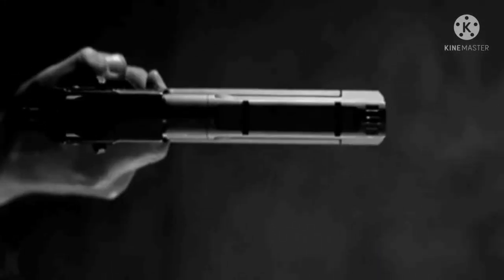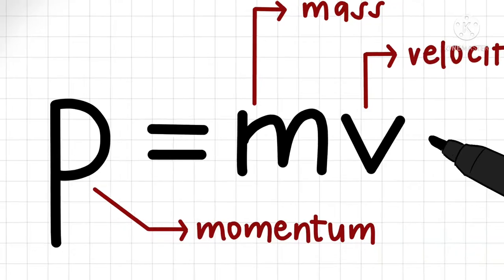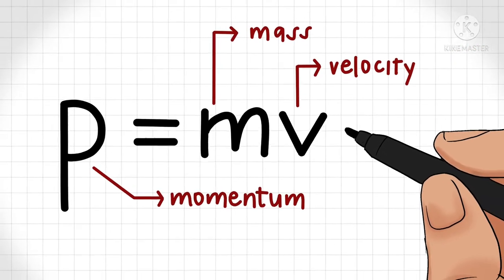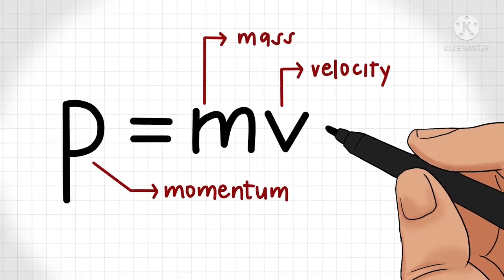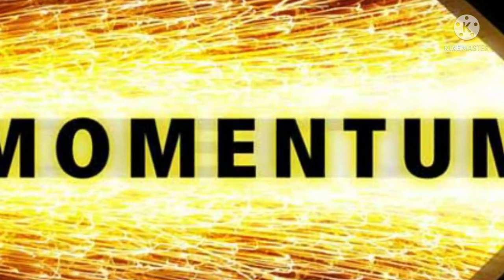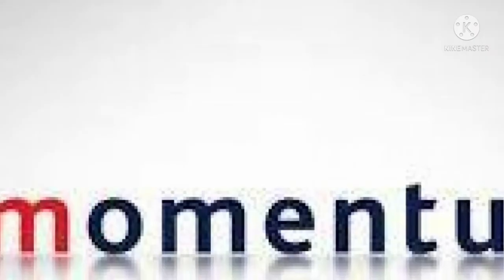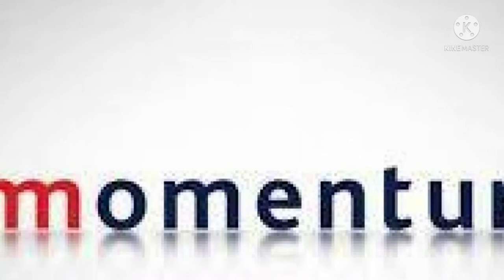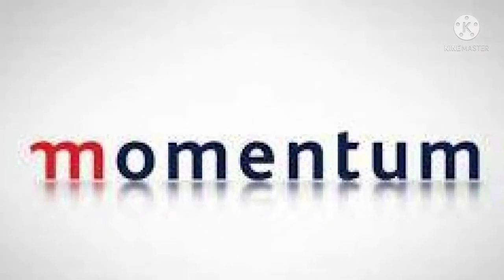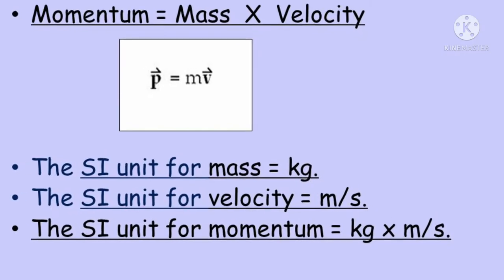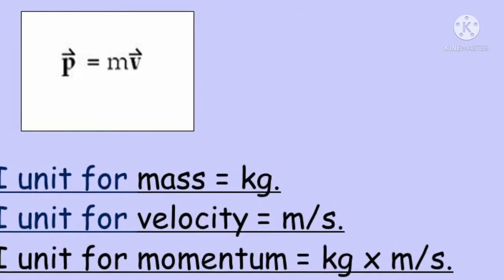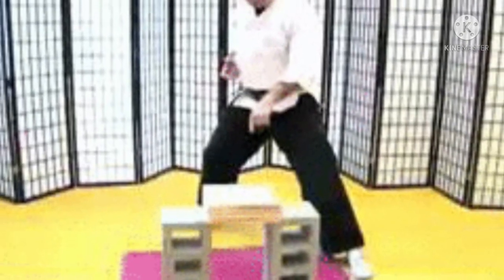Momentum is a vector quantity and acts in the direction of velocity. We have seen that momentum is equal to mass into velocity. The SI unit of momentum is kilogram meter per second, and every moving body possesses momentum.